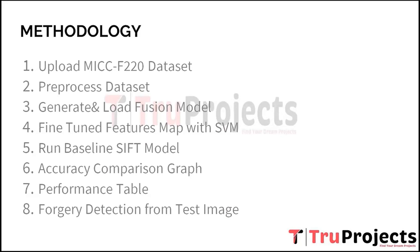The second step is pre-processing the dataset. Pre-processing tasks include resizing images to a consistent resolution, normalizing pixel values, and dividing the dataset into training and testing sets. This ensures the dataset is in a suitable format for training the models and evaluating their performance.